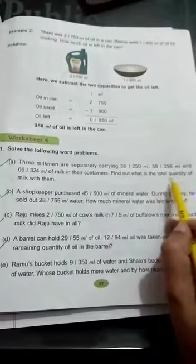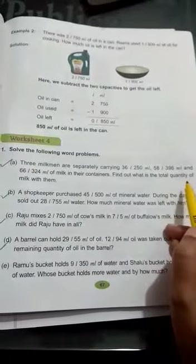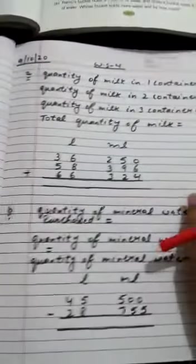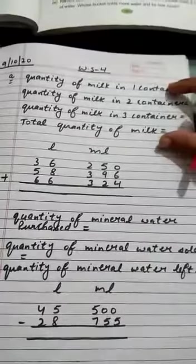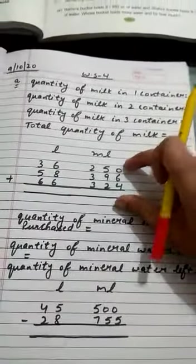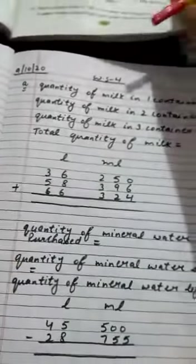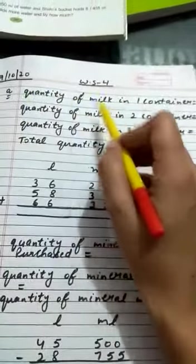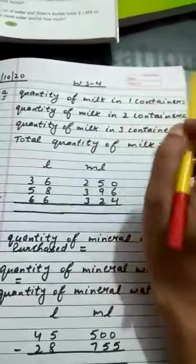So the word total means we need to find the total quantity of milk. Let's see, first of all, we have to start from here. Quantity of milk in one container.